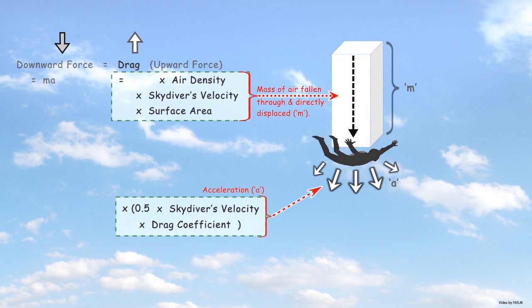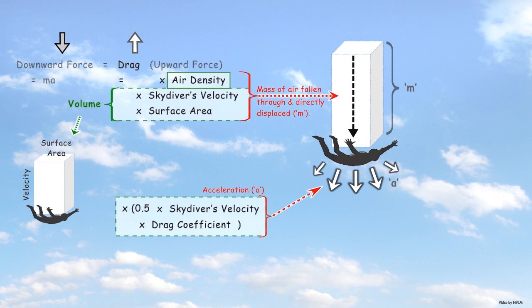In addition, the mass of air directly displaced can be split between the factors that affect the density and the volume of air displaced each second. Combined, density and volume is the mass of air displaced.